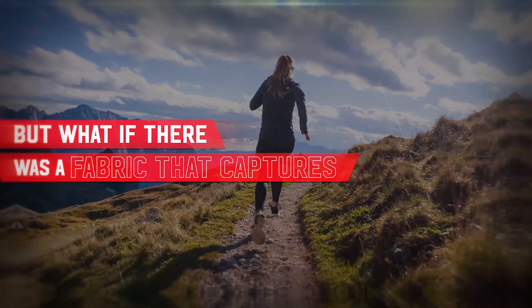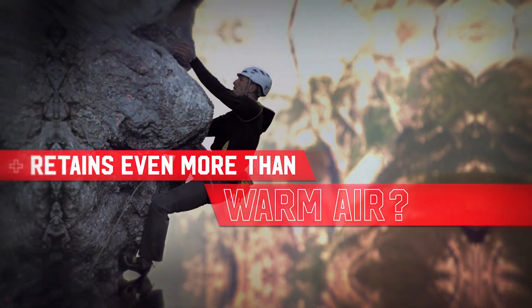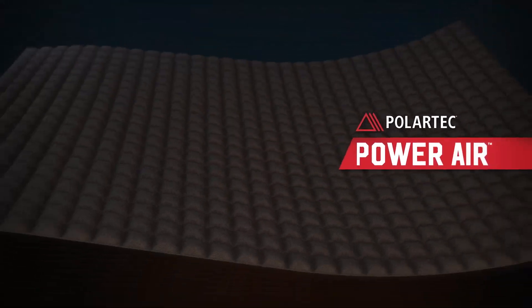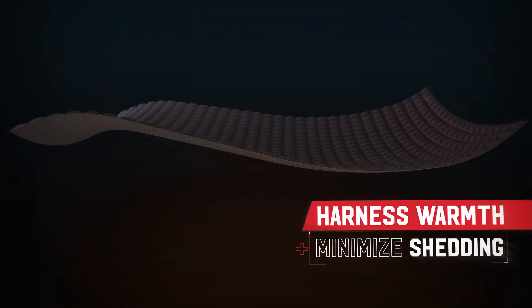But what if there was a fabric design that could help capture and retain even more than warm air? Introducing Polar Tech Power Air, a revolutionary fabric that harnesses warm air and minimizes microfiber shedding. Power Air is a single fabric structure knit into multiple chambers.